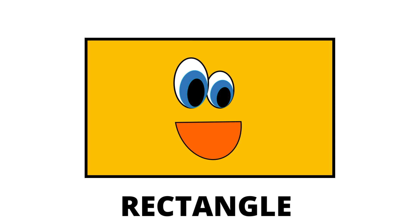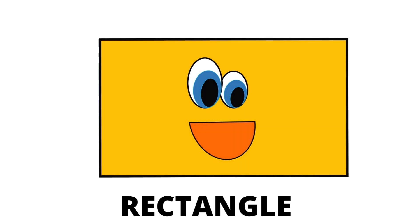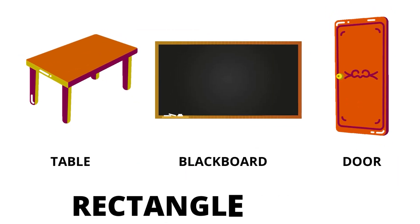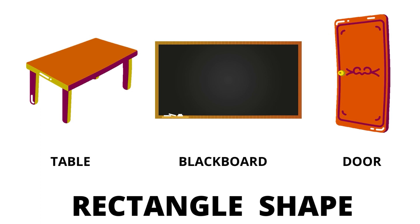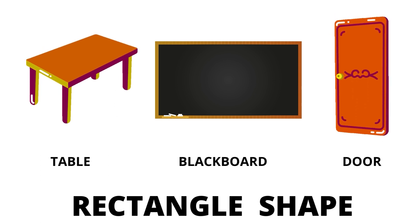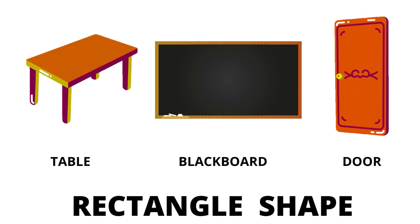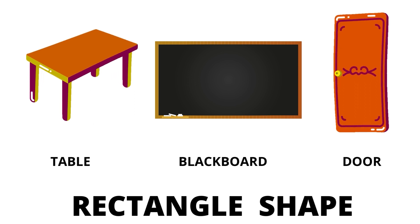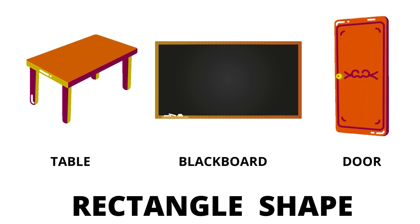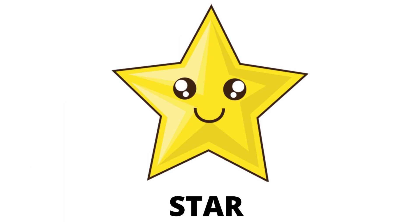Our next shape is rectangle. Rectangle has four sides, but the two sides of a rectangle are longer than the other two sides. The real life examples of rectangle are tables, blackboard, and door.